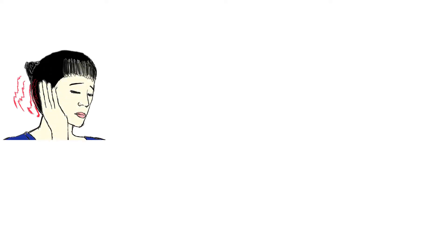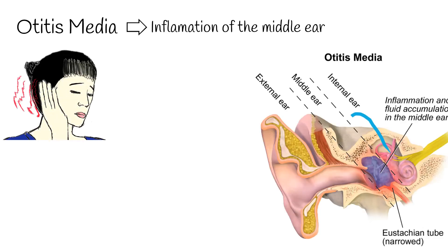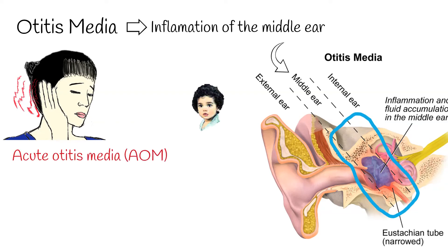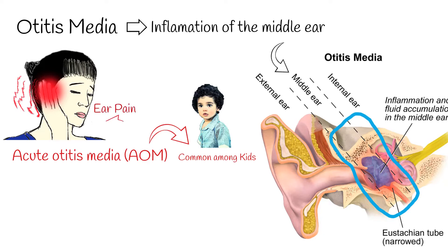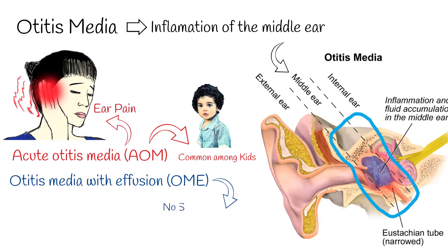Otitis media is a group of diseases of the middle ear. Two main types exist. First, acute otitis media (AOM) is most common in children and associated with ear pain. Second, otitis media with effusion (OME) is typically not associated with symptoms, although occasionally a feeling of fullness is described. Non-infectious fluid is present in the middle ear, which may persist for weeks or months, often after an episode of acute otitis media.